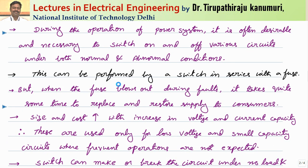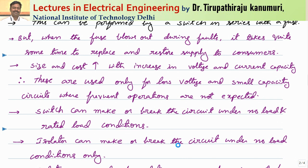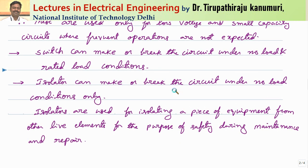During the operation of power systems, it is often desirable and necessary to switch on and off various circuits under both normal and abnormal conditions. This can be performed by a switch in series with a fuse, but if the fuse blows out during a fault, it takes quite some time to replace and restore the supply, and the size and cost increase with voltage and current capacity. That is why these are used only for low voltage and small current circuits where frequent operations are not expected. A switch can make or break the circuit under no-load and rated load conditions only. An isolator can make or break the circuit under no-load conditions only, and isolators are used for isolating a piece of equipment from other live elements for the purpose of safety during maintenance and repair.